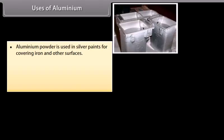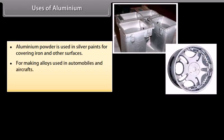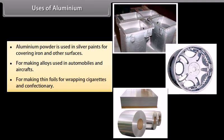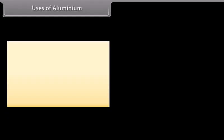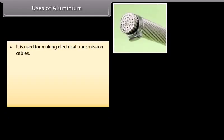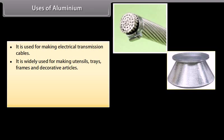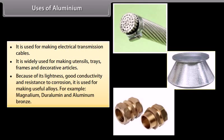Uses of aluminum. Aluminum powder is used in silver paints for covering iron and other surfaces, for making alloys used in automobiles and aircrafts, for making thin foils for wrapping cigarettes and confectionery. It is used for making electrical transmission cables. It is widely used for making utensils, trays, frames, and decorative articles because of its lightness, good conductivity, and resistance to corrosion. It is used for making useful alloys. For example, magnalium, duralumin, and aluminum bronze.